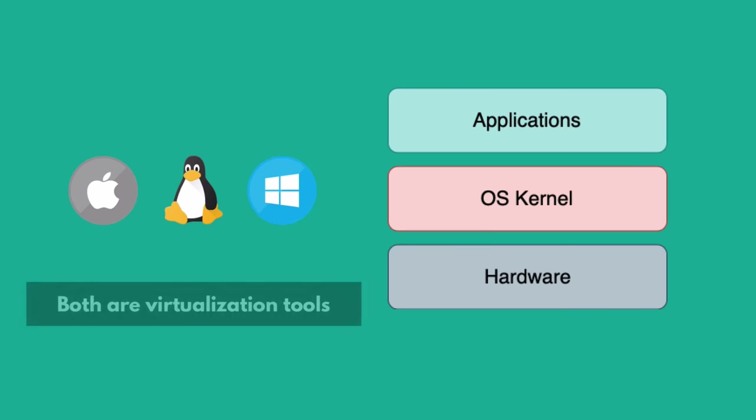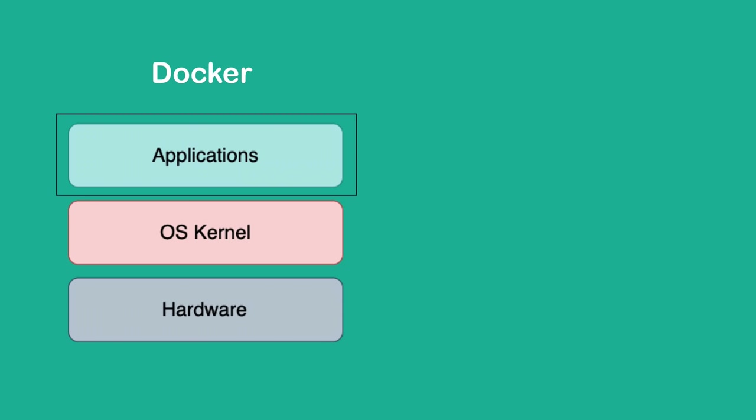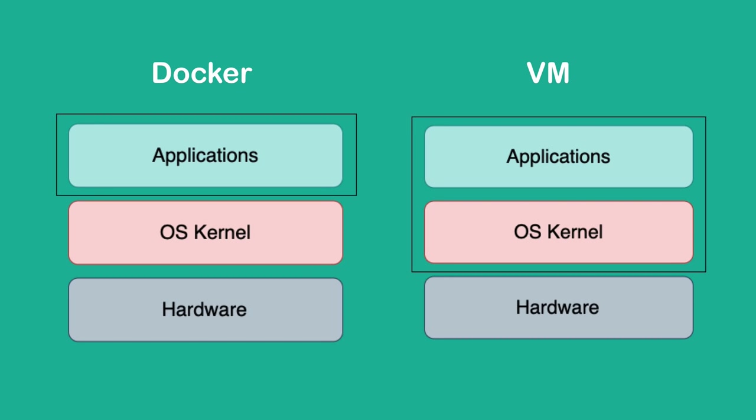Both Docker and virtual machines are virtualization tools, so the question is: what parts of the operating system do they virtualize? Docker virtualizes the applications layer — when you download a Docker image, it contains the applications layer of the OS with other applications installed on top, and it uses the kernel of the host because it doesn't have its own kernel. A virtual machine, on the other hand, has the applications layer and its own kernel, so it virtualizes the complete operating system.